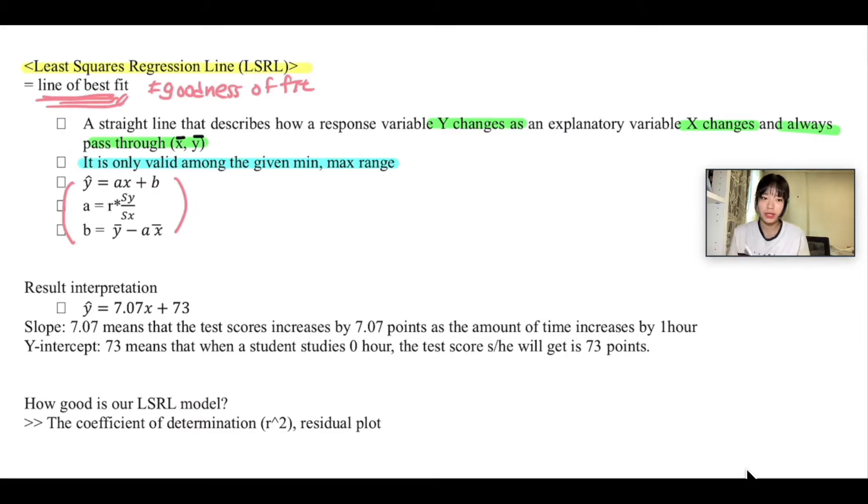This is what your LSRL equation will look like: ŷ = ax + b, where a is the slope and b is the y-intercept.